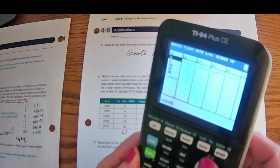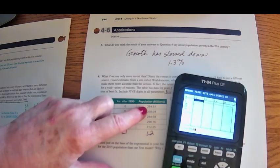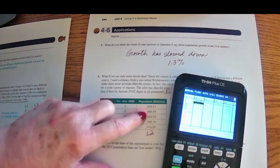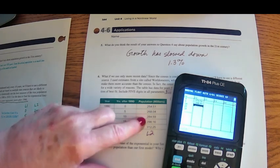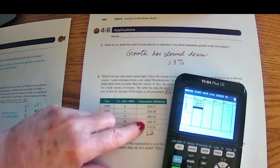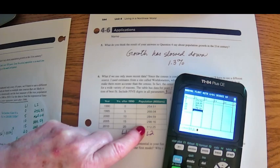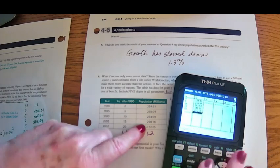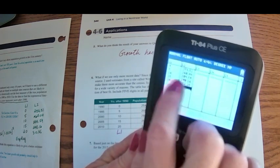And in L2, cursor over, get into the L2, this is going to be 254.51, 268.04, 284.59, 298.16, and 312.25.